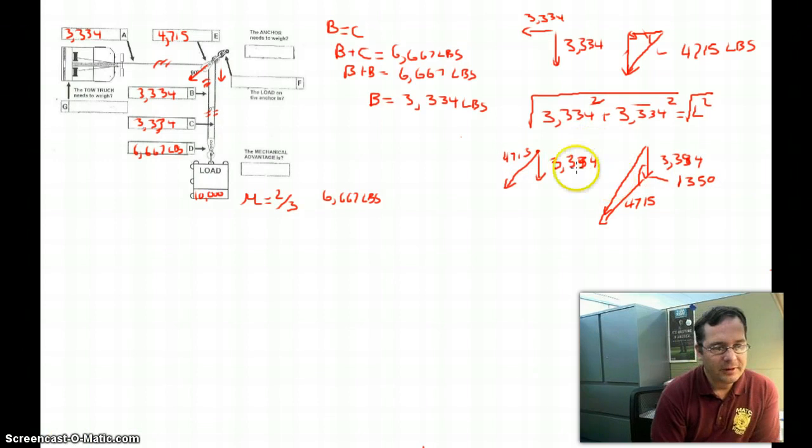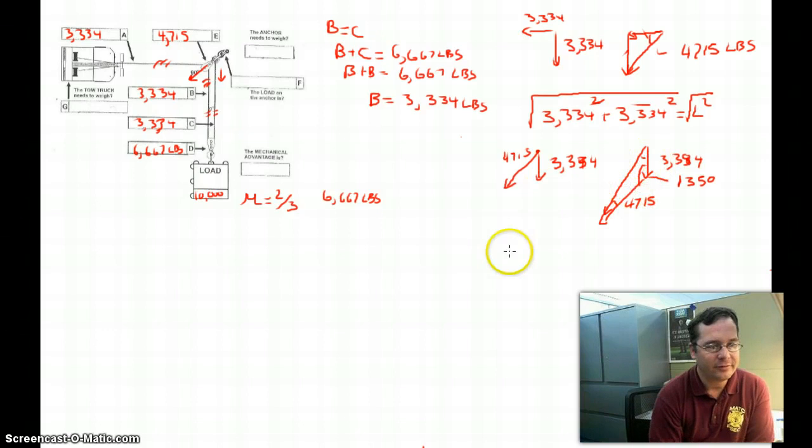This problem gets complex because these other two remaining angles are difficult to figure. So you'd have to use law of cosine. Here's an alternative approach that will make this simpler. I'm going to go back to my original diagram.